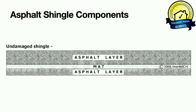Knowing how a shingle is put together helps you diagnose what's happening with the roof when you start seeing different things. The first component is an organic felt paper mat — that's the meat of the actual shingle. They put an asphalt coating on the top and bottom of that layer. The thicker the asphalt coating and the thicker the mat, the longer the lifespan. But asphalt has one big weakness: sunlight. We have to protect the asphalt layers from the sun, and that's what the granules on top are for.